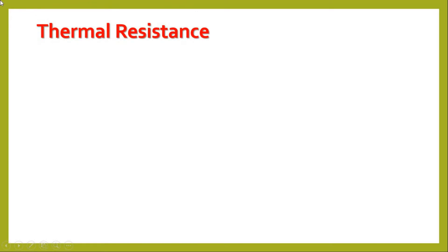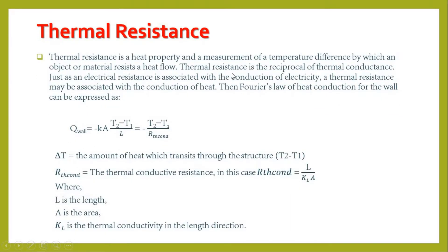Thermal resistance is a heat property and a measurement of a temperature difference by which an object or material resists heat flow. It is similar to electrical resistance — thermal resistance is the reciprocal of thermal conductance, just as electrical resistance is associated with conduction of electricity. Fourier's law for a wall gives: q_wall = -k·A·(T2 - T1) / L, where the thermal conduction resistance R_th = L / (k·A). Here L is length, A is area, and k is thermal conductivity.